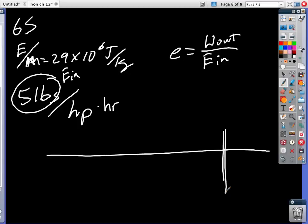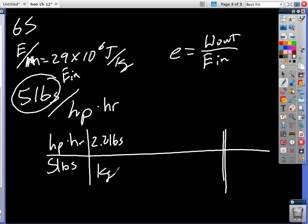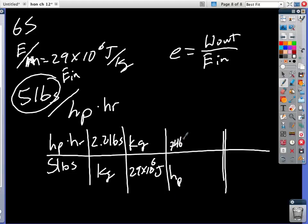So energy in. Okay, horsepower times hour. And this is 5 pounds, 2.2 pounds per kilogram. And it is a kilogram, 29 times 10 to the 6th joules.